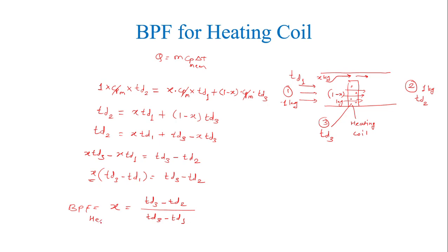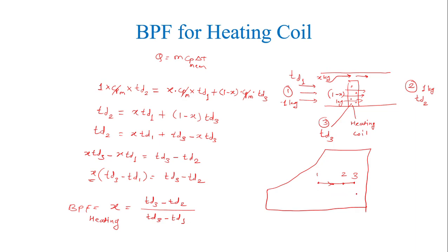This is the bypass factor for the heating coil. On the psychrometric chart, this is a sensible heating process. Point one is the inlet, ideally heating should reach point three (the coil surface temperature), but due to losses, heating only reaches point two. So the bypass factor is the unaffected difference (td3 − td2) divided by the maximum possible heat transfer (td3 − td1) — essentially the loss divided by the maximum possible heat transfer.